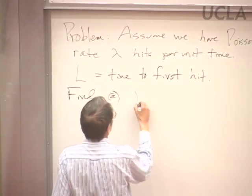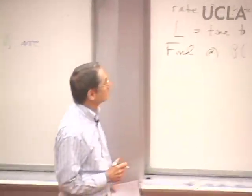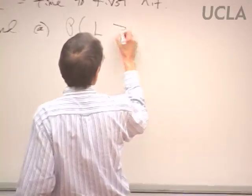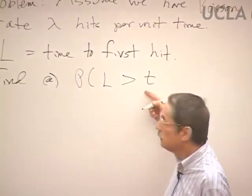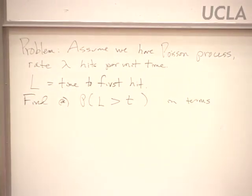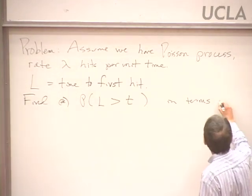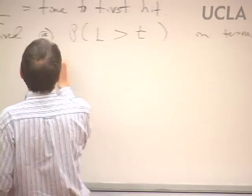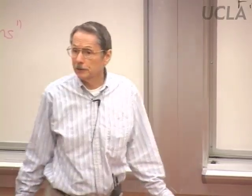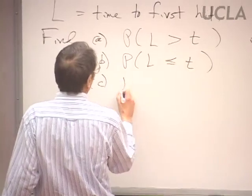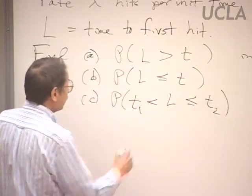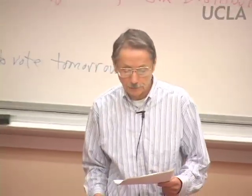Let's calculate the following quantities: the probability that when we run this experiment and use our stopwatch to see how long it takes to get that first hit, the probability that it will be more than some number t. Of course, the answer depends on what t is — the larger t is, the higher the probability should be — and it depends on the rate lambda. We also want the probability that L is less than or equal to t, giving us the cumulative distribution function.